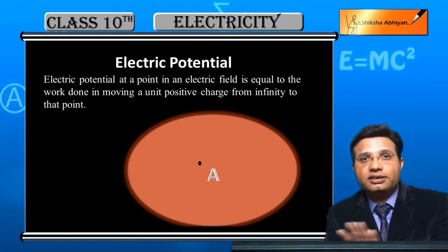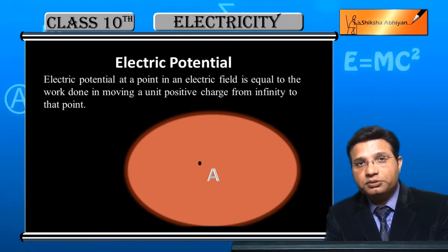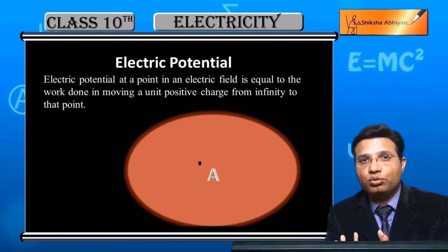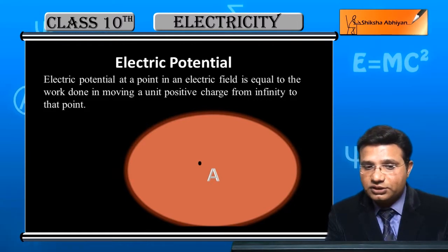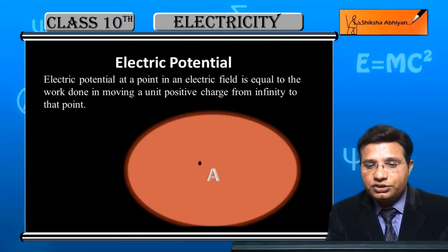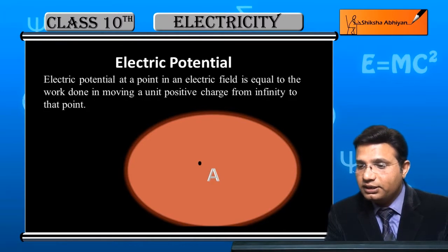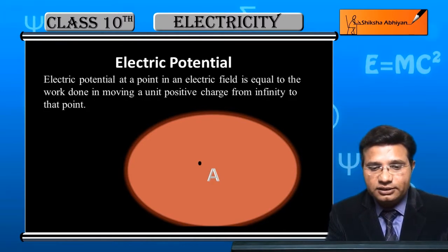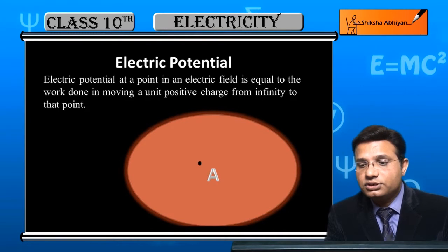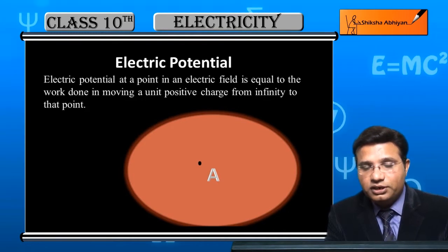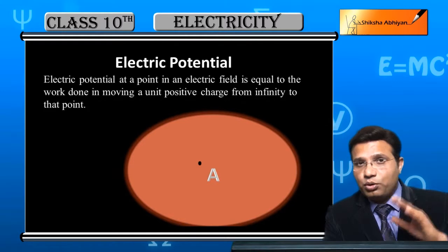At point A in the electric field, what is electric potential? The definition is: electric potential at a point in an electric field is equal to the work done in moving a unit positive charge from infinity to that point.